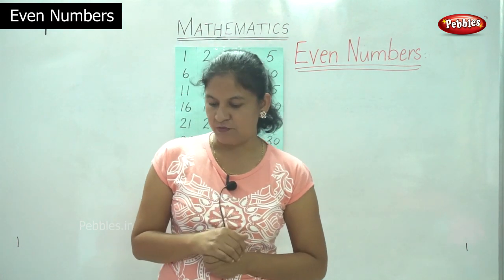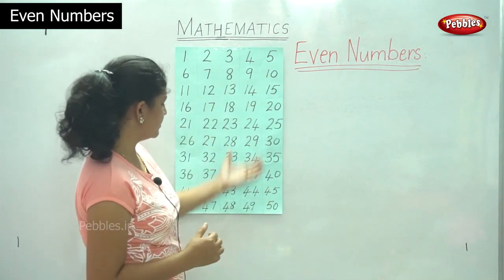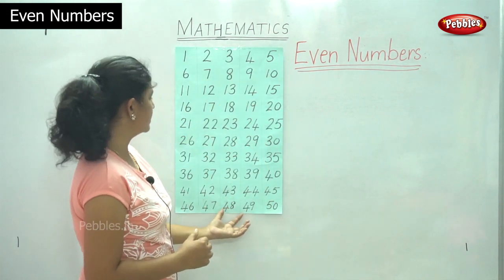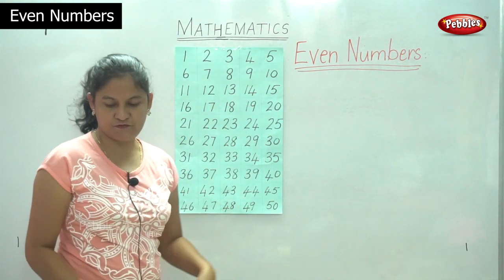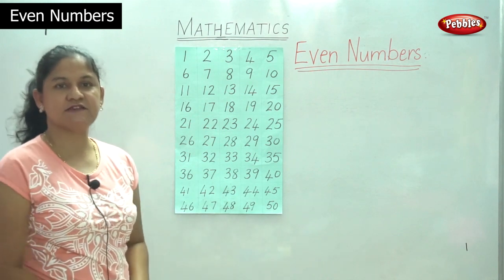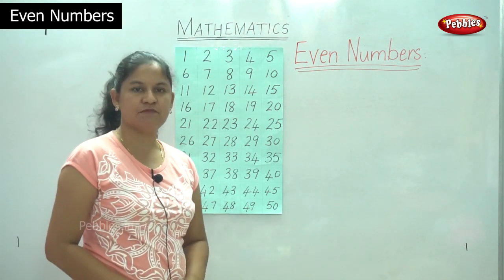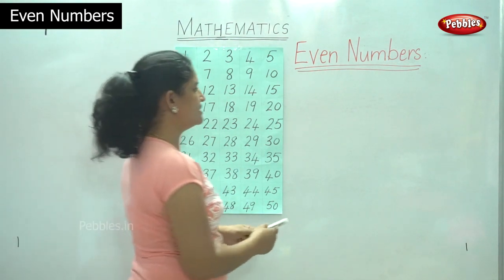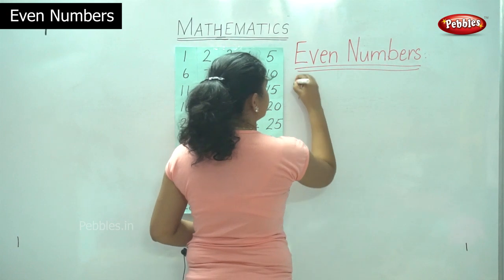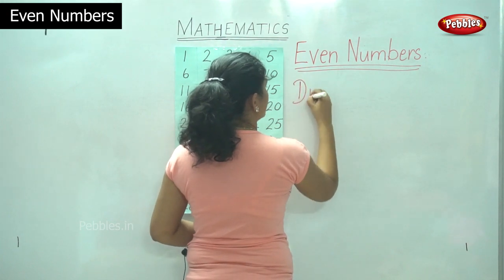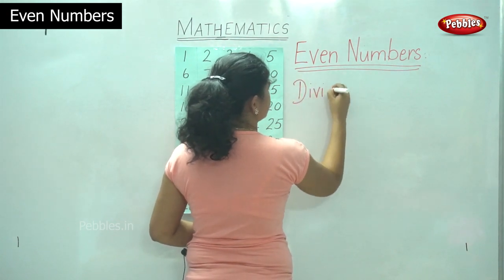So I will show you the even numbers from 1 to 50. As I have told you, even numbers are numbers that are divisible or divided by two.